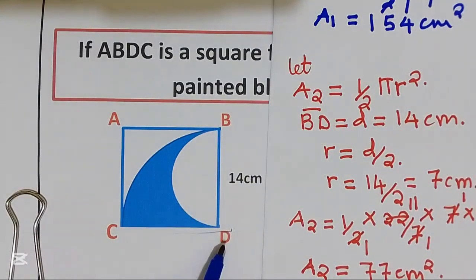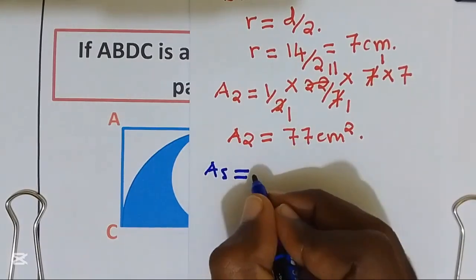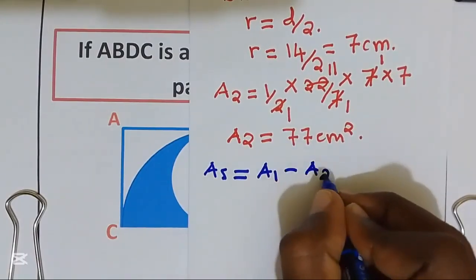The area painted blue is given by area 1 take away area 2.